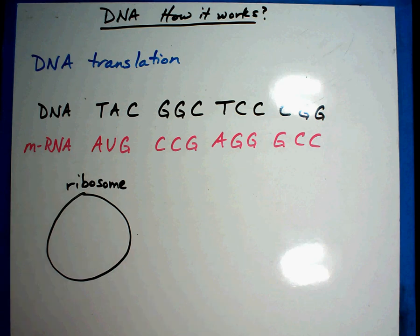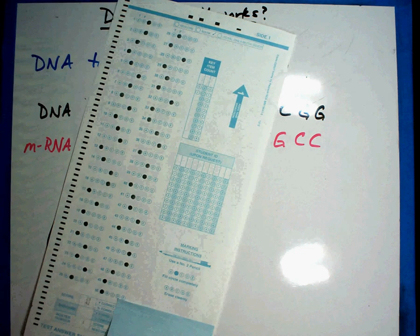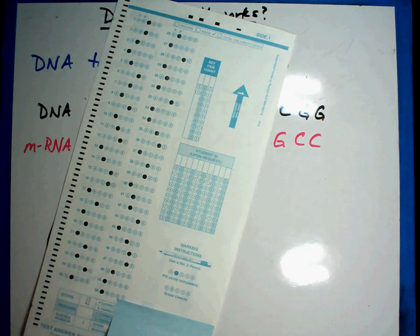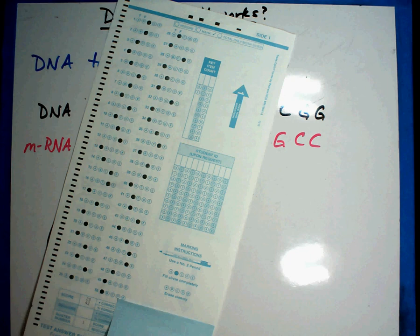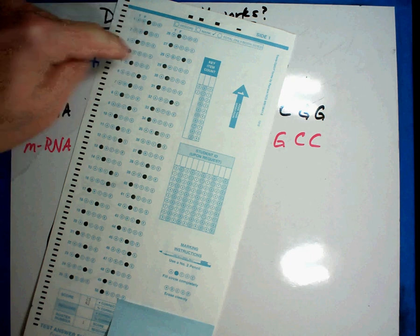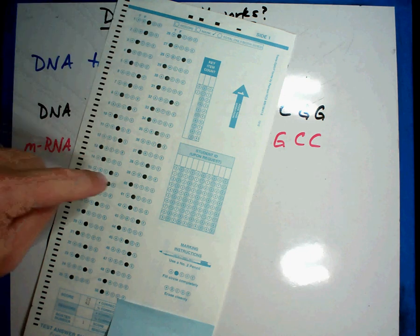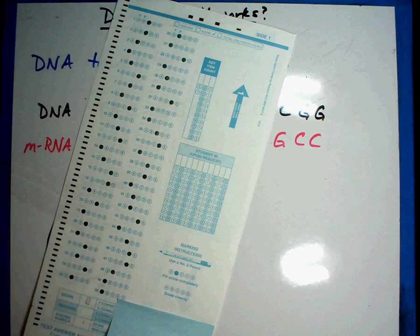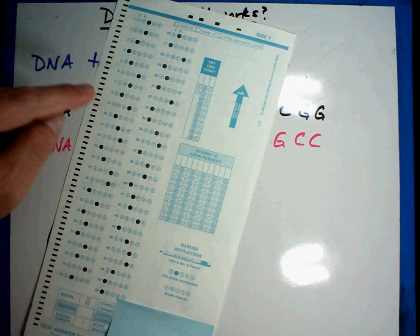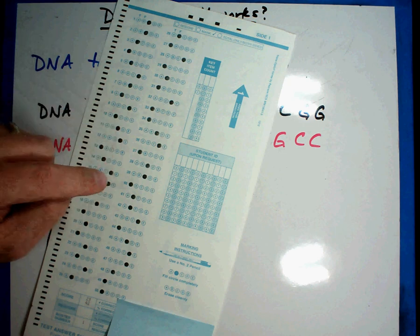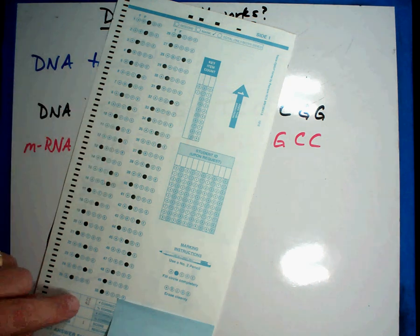Now the easiest way for me to explain a ribosome and how it works is the idea of a scantron. Now whenever you take a test with a scantron, you go through and you put bubbles for your answers. The bubbles and the order that you put them in is very important. When you run it through the scantron machine, it reads the bubbles, counts how many you got correct and that's where you get your score, such as in this case.